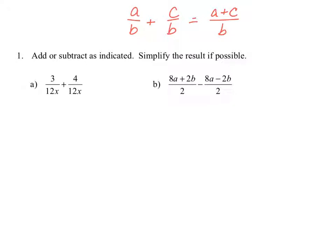Let's add and subtract as indicated and simplify the result as possible. Example A is 3 over 12x plus 4 over 12x. We can add those two fractions together because they have the same denominator. So you're going to add 3 plus 4 in the numerator and keep the denominator as 12x, so that your final answer is 7 divided by 12x, which can't be simplified.